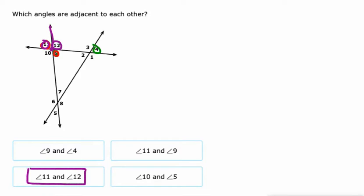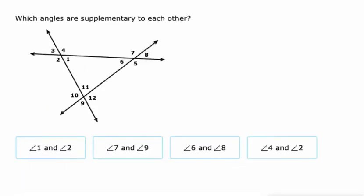10 and five. Let's see. No, those are not adjacent. They have to have a common vertex. So 11 and 12.